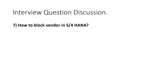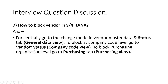How do we block a vendor in SAP S/4 HANA? To block centrally, go to change mode in the vendor master and use the status under the General Data view. To block at the company code level, go to the status on the company code view. To block at the purchasing organization level, go to the purchasing tab in the purchasing view. This is how vendor blocking is managed in SAP S/4 HANA.